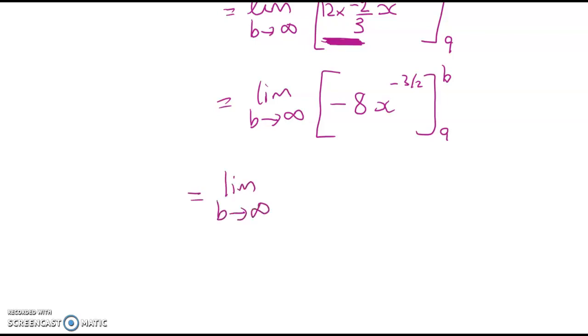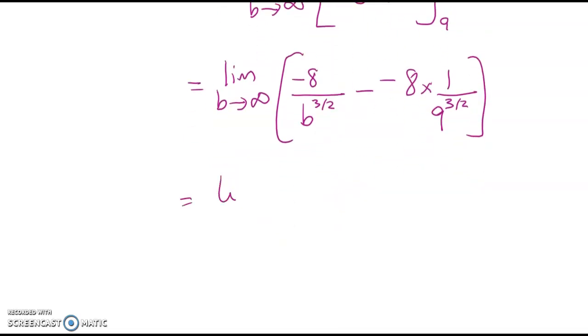But we leave the limit for the very end. So here we've got negative 8 over b to the power of 3 over 2 minus negative 8 times now 9 to the negative 3 over 2. That's negative 8 over b to the power of 3 over 2 plus 8 over, right, 9 to the power of 3 over 2. Please don't grab your calculator. So 9 to the power of 1 half, the square root of 9 is 3 and then I want to cube it. So it's 8 over 27.